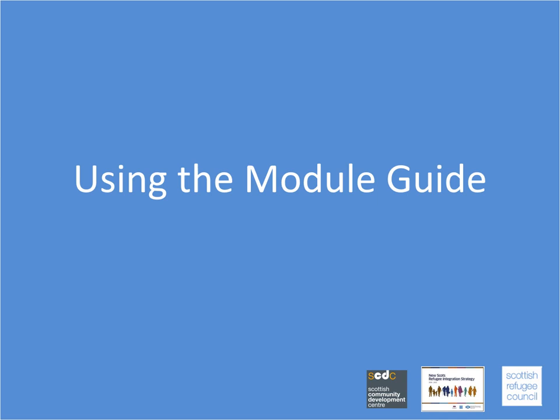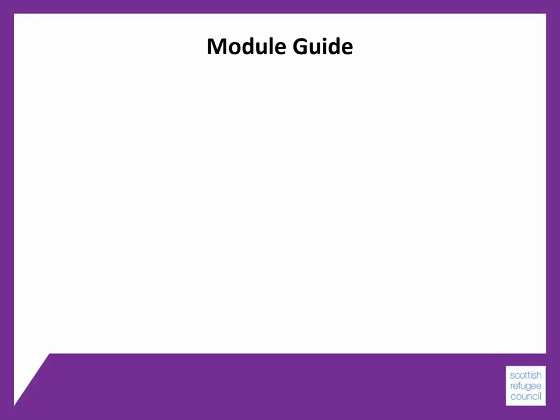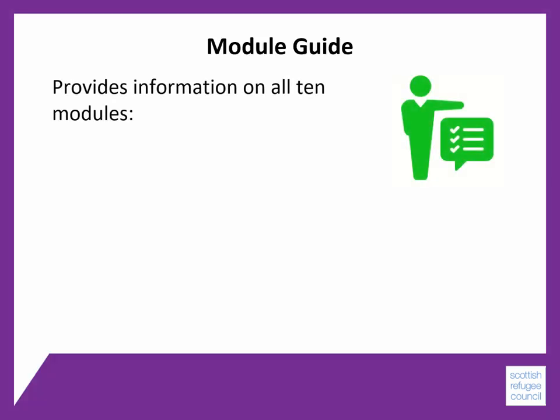Using our module guide. Building stronger community organisations consists of 10 modules. Module 1 is important for all groups as it contains the module guide, which will help you to work out which modules are most important for your group. The module guide provides information on all 10 modules.